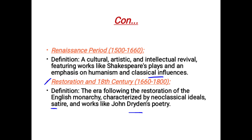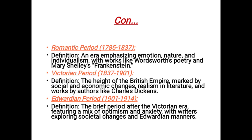Then we have the Romantic period, which started from 1785 to 1837. Its definition is an era emphasizing emotions — emotions were the most important thing at that time — nature, and individualism, with works like Wordsworth's poetry and Mary Shelley's Frankenstein, which is actually a novel.